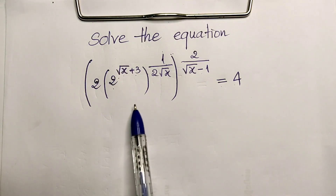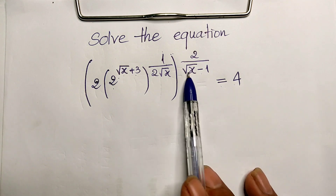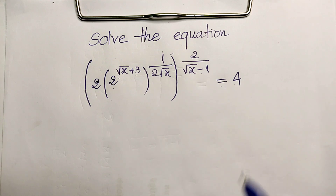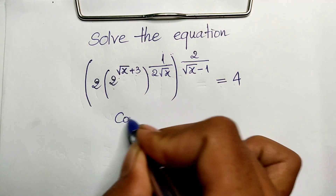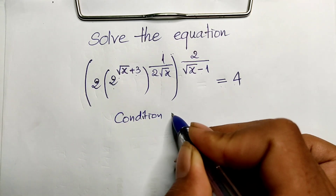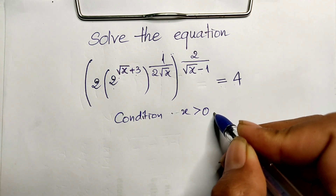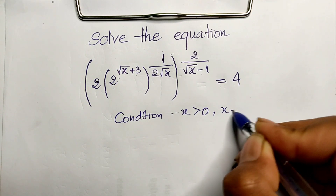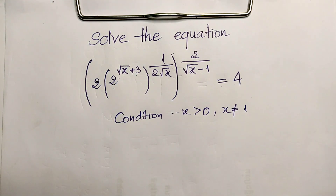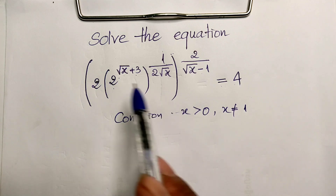Before we solve this equation, we must state the conditions. Since we have square root of h in the denominator, the condition is: h is positive and h is not equal to 1.